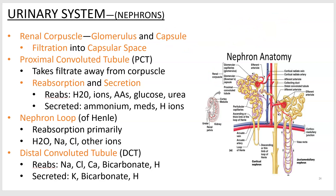Proximal convoluted tubules are next — proximal means close to the glomerulus. Here the other two urinary processes take place: reabsorption, where you take stuff back from the tubes into your body, and secretion, where you secrete stuff into the urine. So you secrete things you want to get rid of, and reabsorb things you want to keep.